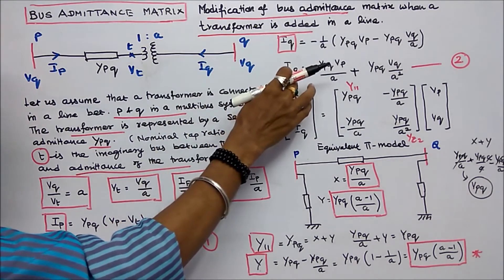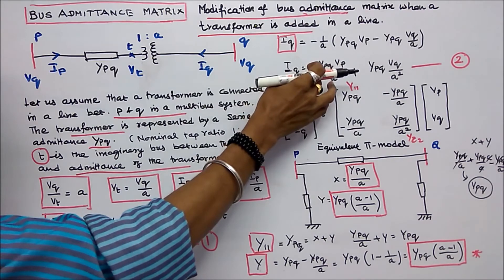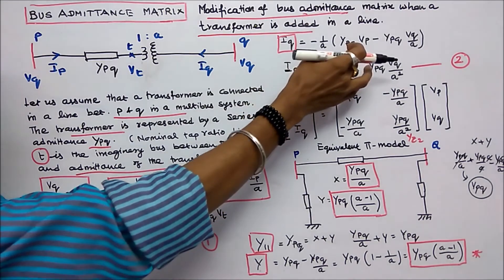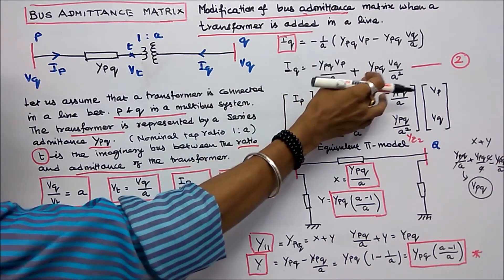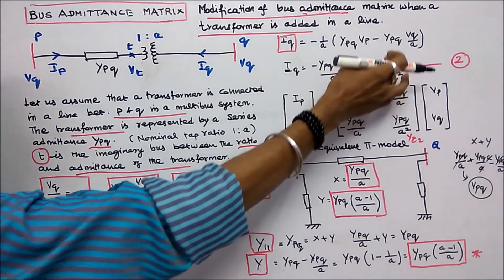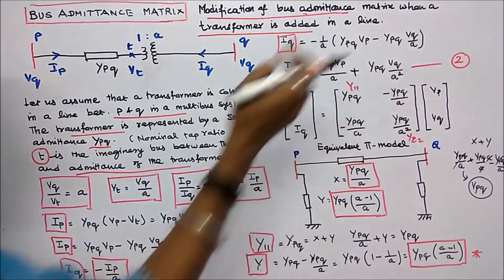IQ is equal to minus YPQ divided by A into VP, plus YPQ divided by A squared into VQ. This is equation 2.